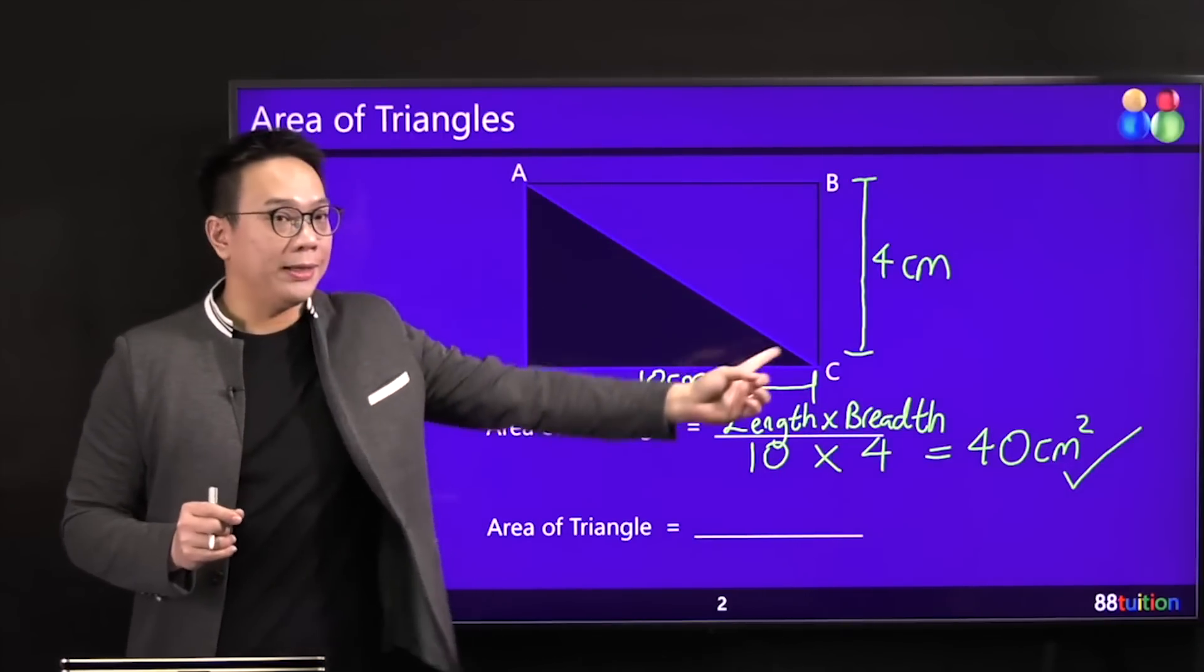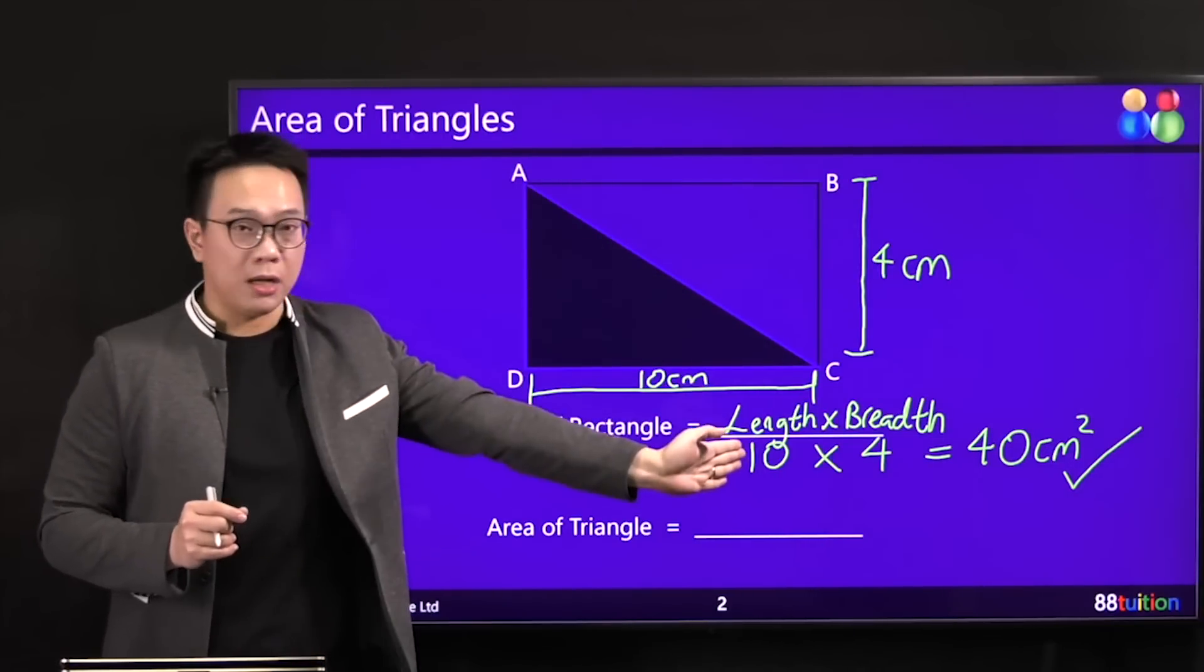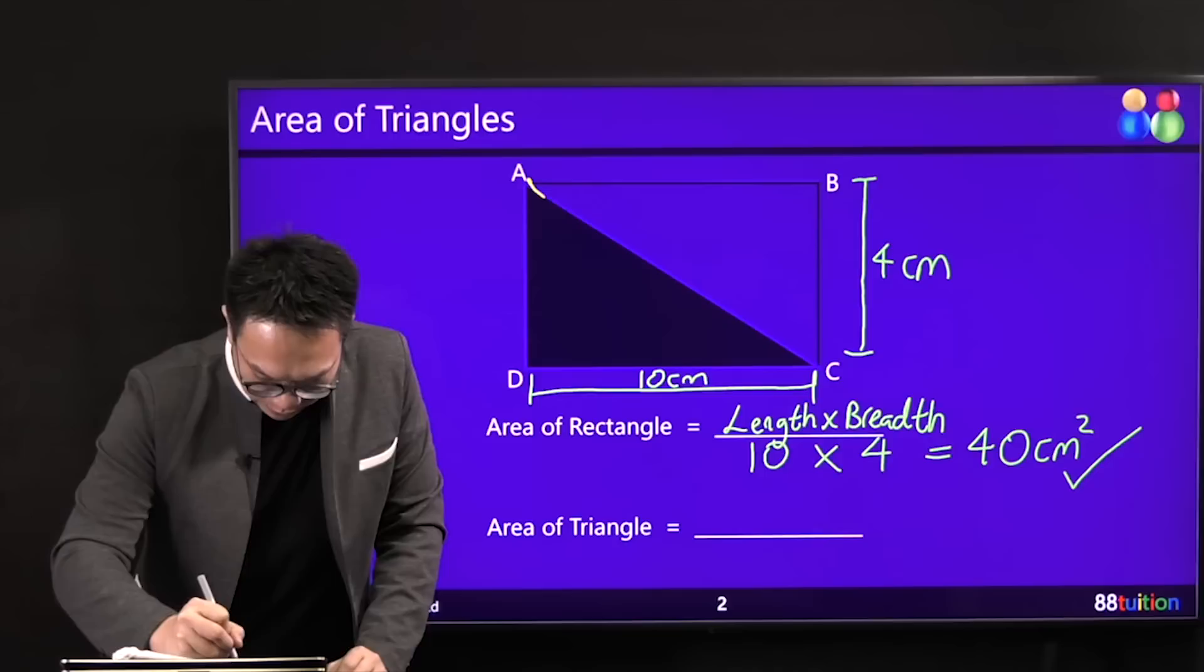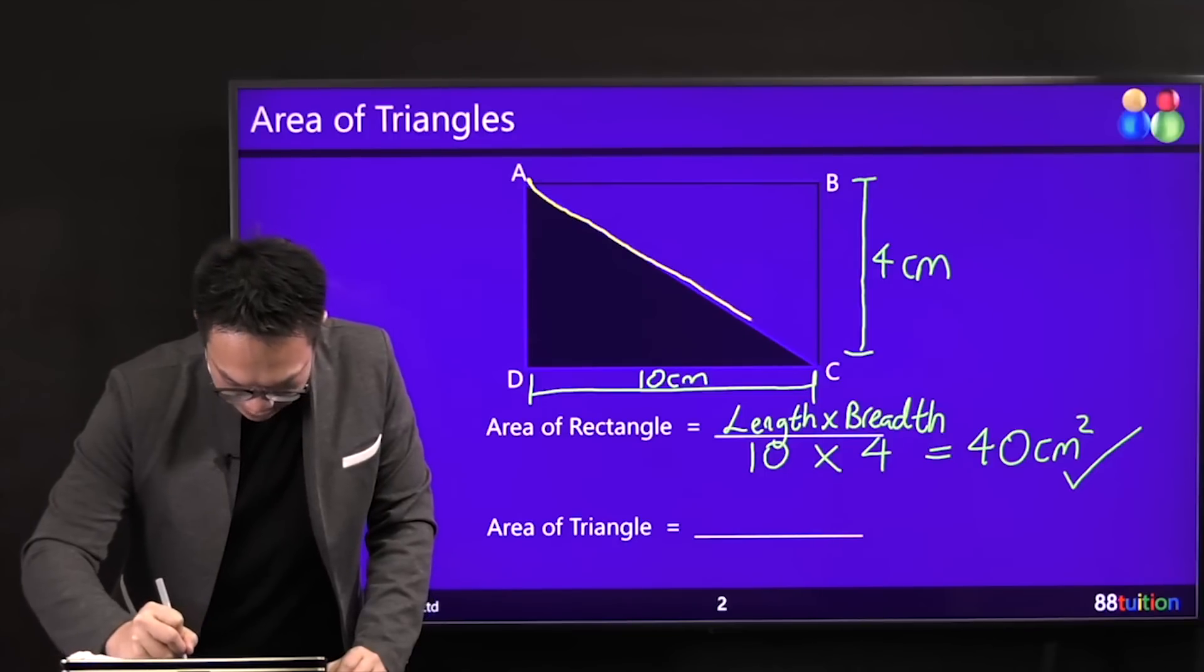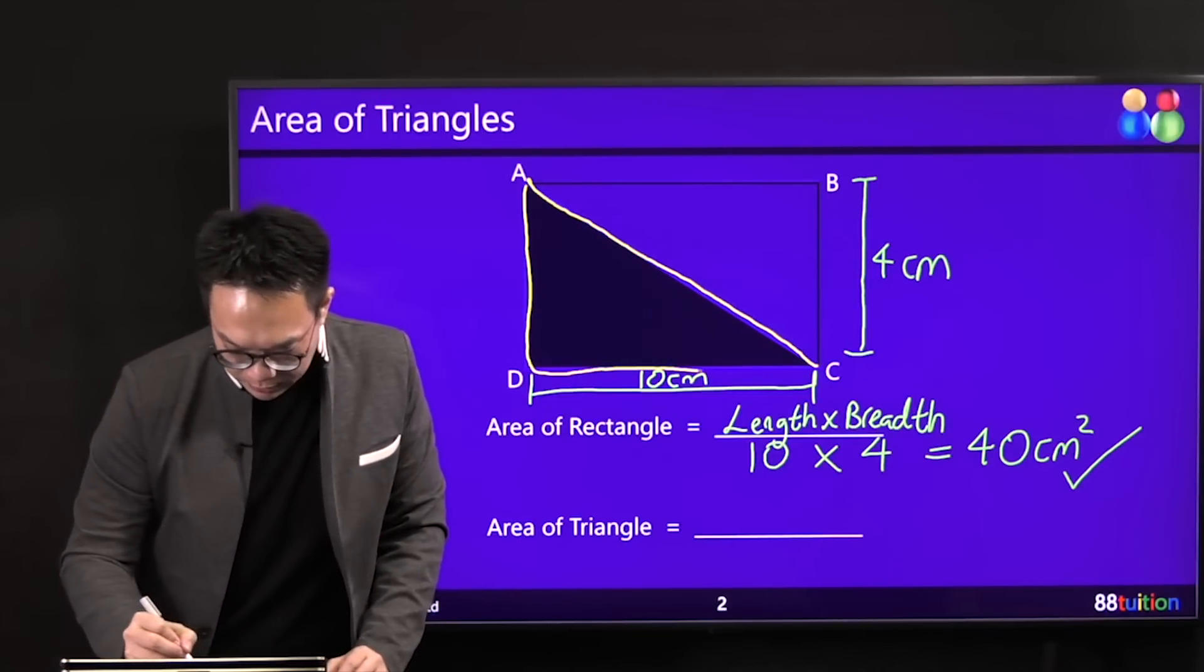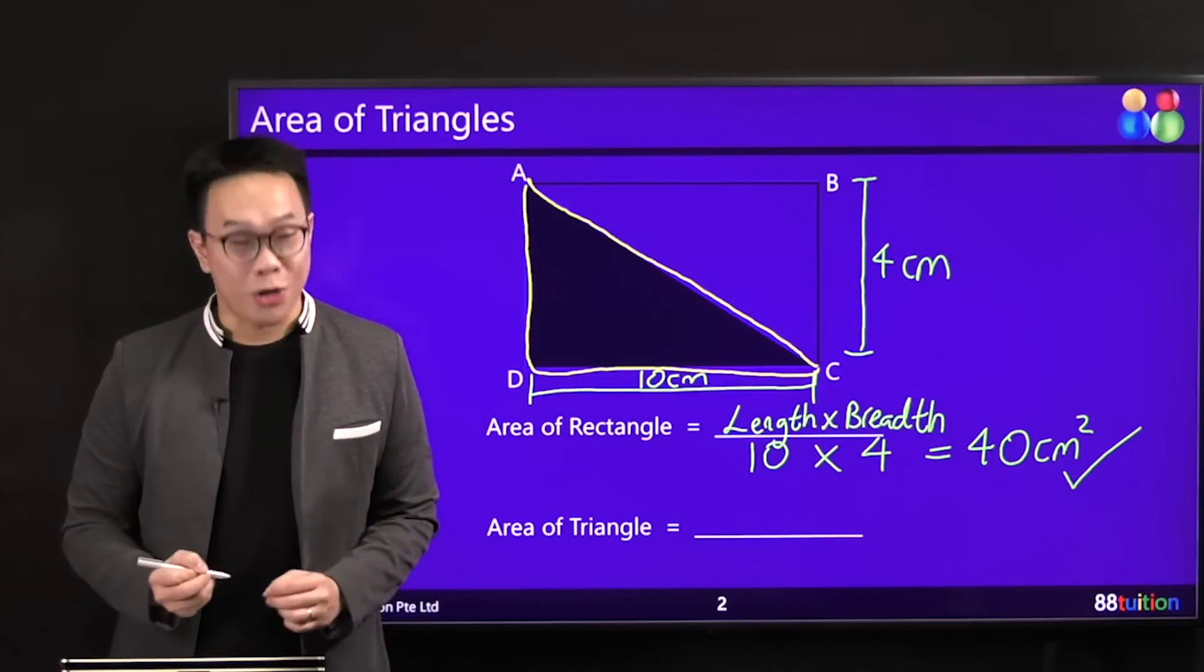As you can see, this is one full rectangle, right? If I slash it, slash it from one end to the other end, what happens? What do you see? What do you see this shaded portion? It is a triangle, right?